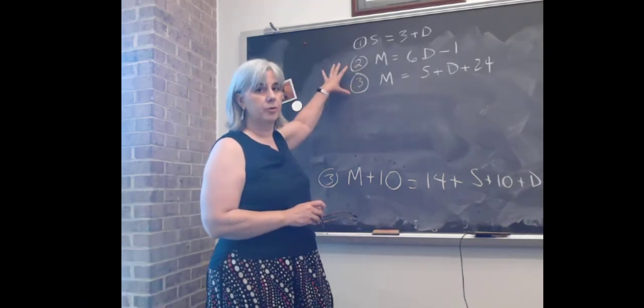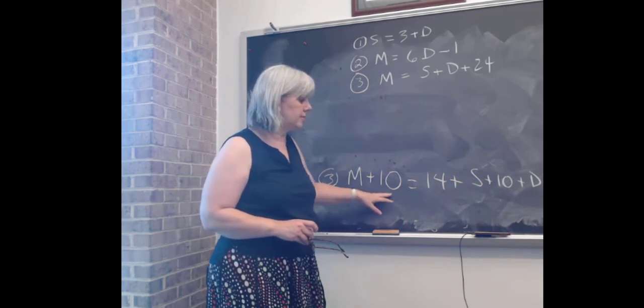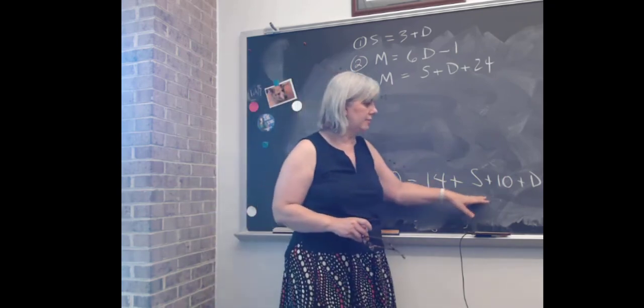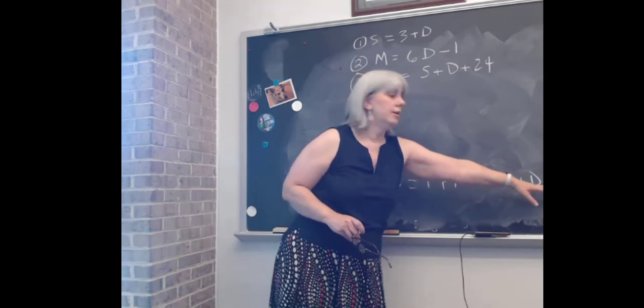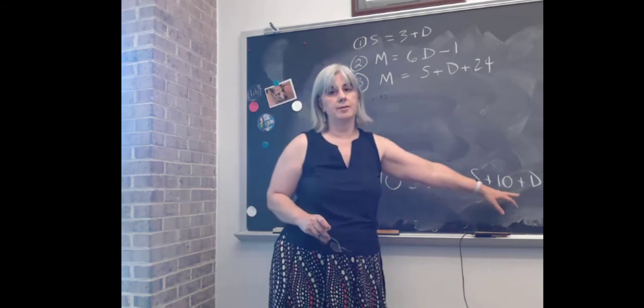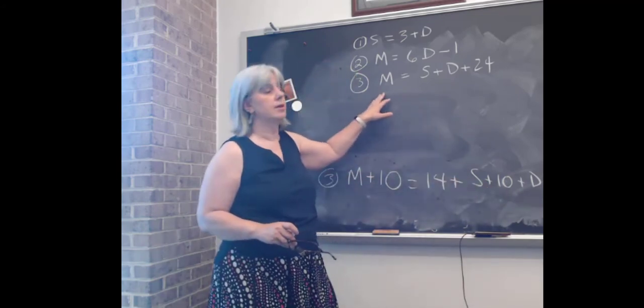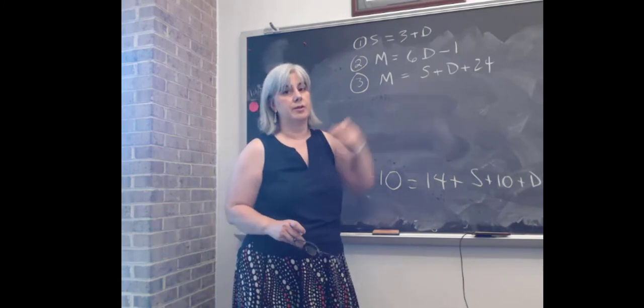I moved the three equations up here, but I did want to talk about this third equation. We had M + 10 = 14 + S + 10 + D + 10. So the 10 + 10 + 14 was 34, giving us 34 + S + D. When I subtract 10 from both sides, I get M = S + D + 24.